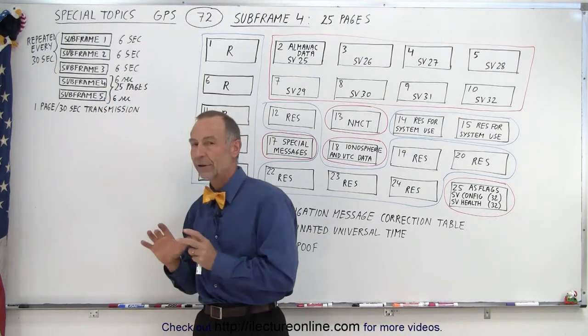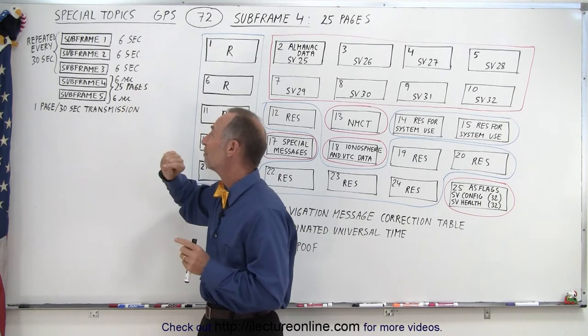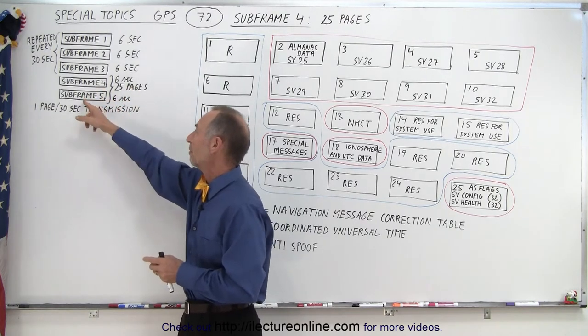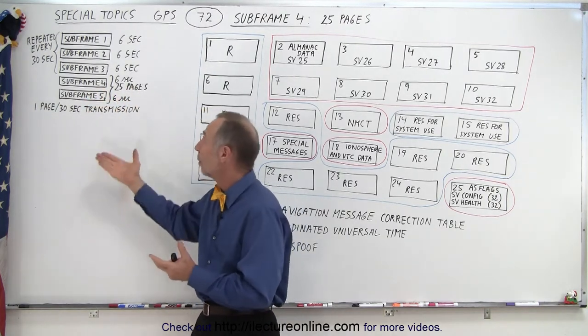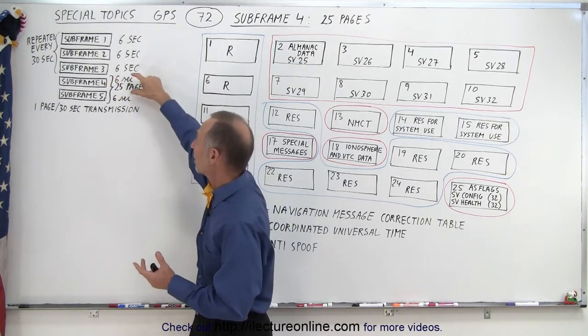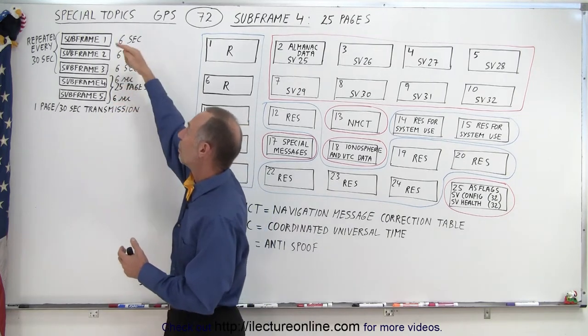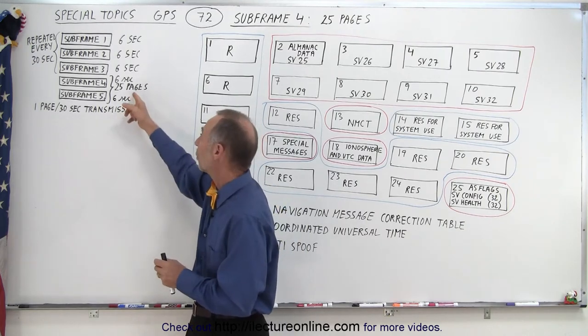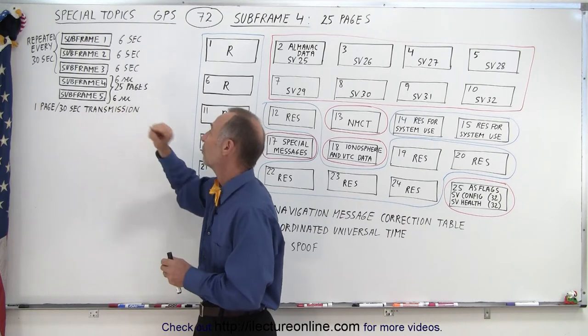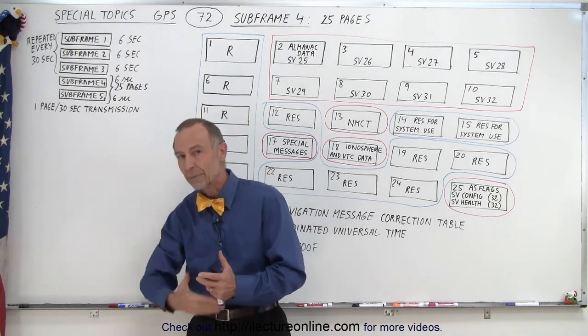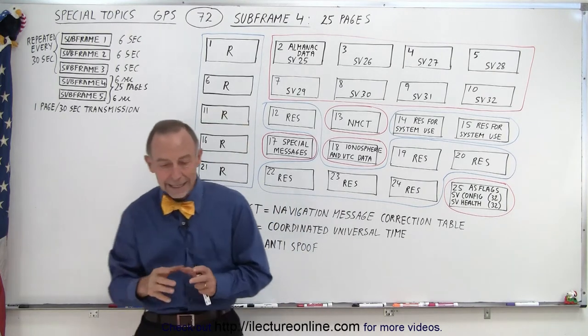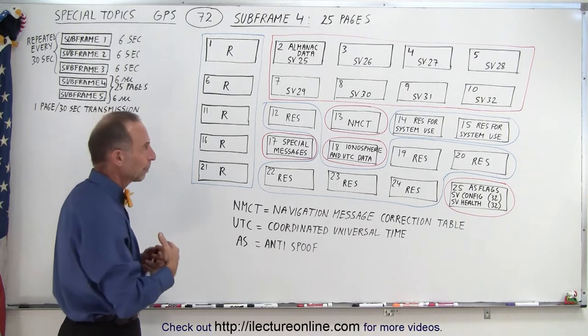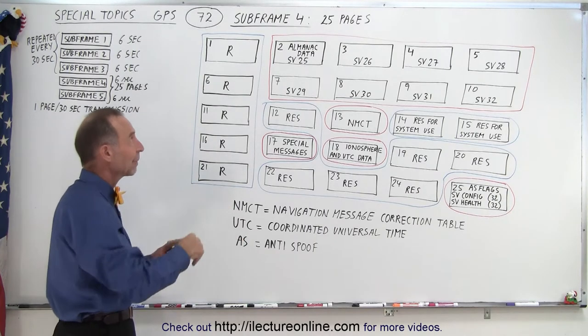Subframes 4 and 5, however, consist of a whole array of pages, 25 pages containing different data. So subframe 4 contains 25 pages and subframe 5 contains 25 pages, so they need to be sent one page at a time every 30 seconds. Of course it takes six seconds for each of those pages, but it is part of the overall frame that's sent every 30 seconds, which means it takes 12 and a half minutes to send all 25 pages of subframe 4 and all 25 pages of subframe 5. And then of course that gets repeated every 12 and a half minutes. Now the data in each page of subframe 4 and subframe 5 is going to be different. That's why it takes that long for it to send because they need to send 25 pages like that.